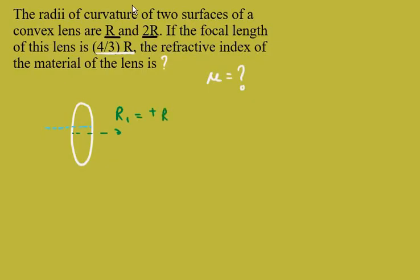So let us mark for this surface R2 will be equal to minus 2R. This is what is given in the question. Now the focal length of the lens is also given. F is equal to 4 by 3R.